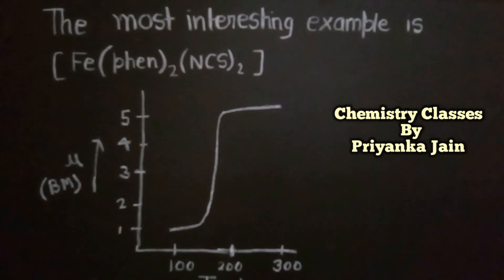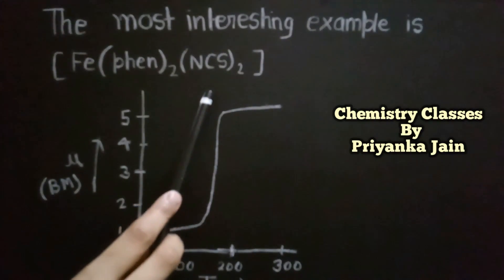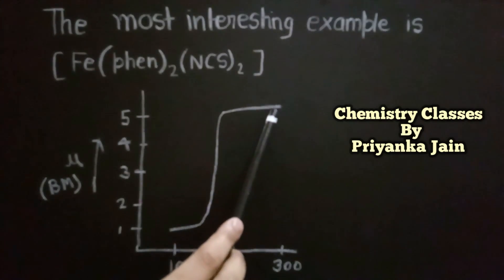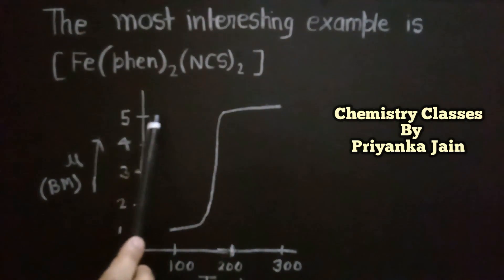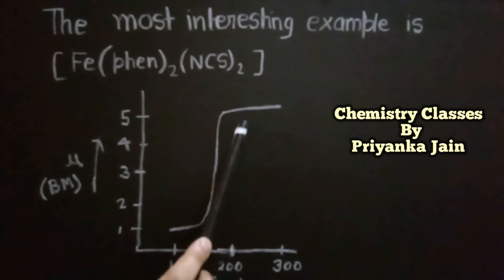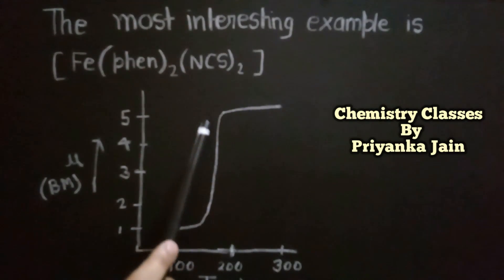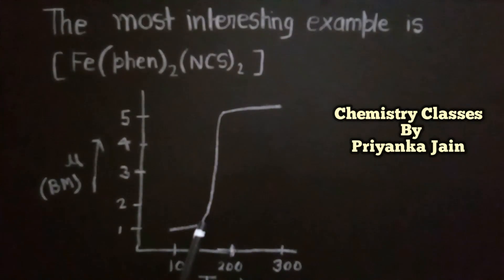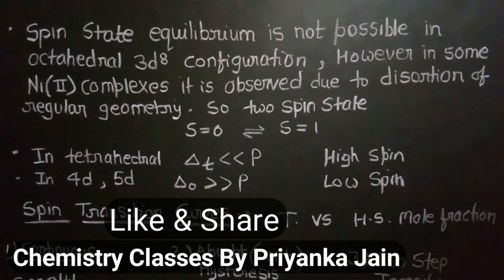An interesting example is the complex Fe(phen)₂(NCS)₂. A graph of magnetic moment versus temperature shows that at high temperatures, the magnetic moment is near 4–5 Bohr magnetons, indicating four unpaired electrons in the high spin state. As temperature decreases and approaches 175 K, there is a sudden drop in magnetic moment to about 1, indicating a transition to the low spin state at approximately 174 K.